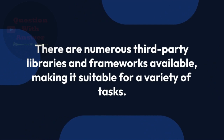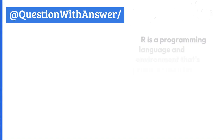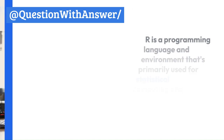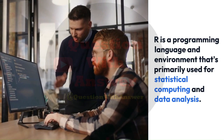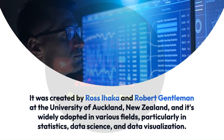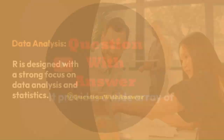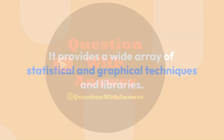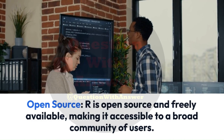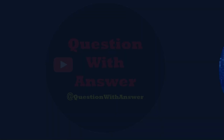2. R Programming. R is a programming language and environment primarily used for statistical computing and data analysis. It was created by Ross Ihaka and Robert Gentleman at the University of Auckland, New Zealand, and is widely adopted in various fields, particularly in statistics, data science, and data visualization. Here are some key characteristics of R. Data Analysis: R is designed with a strong focus on data analysis and statistics, providing a wide array of statistical and graphical techniques and libraries. R is open-source and freely available, making it accessible to a broad community of users. R's functionality can be extended through packages; there are thousands of packages available on CRAN and other sources, covering various domains like machine learning and data visualization.